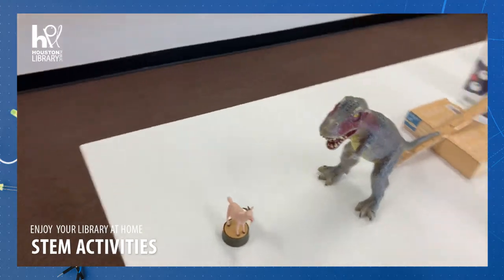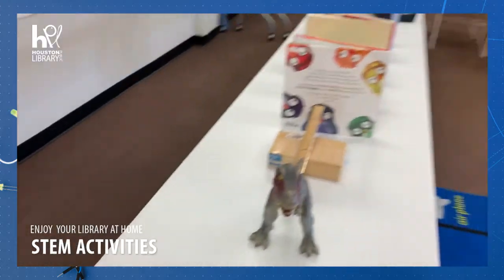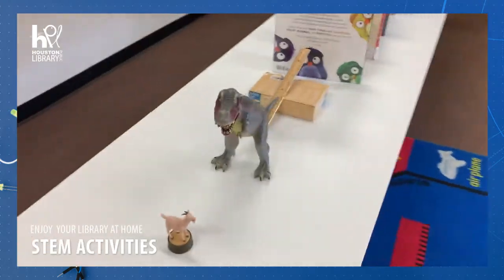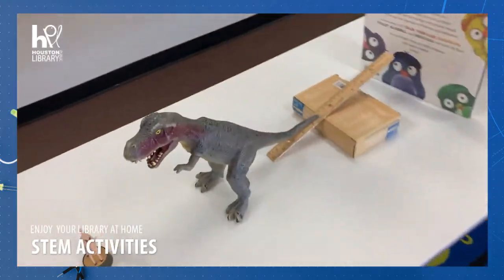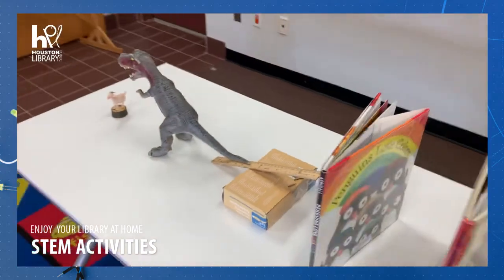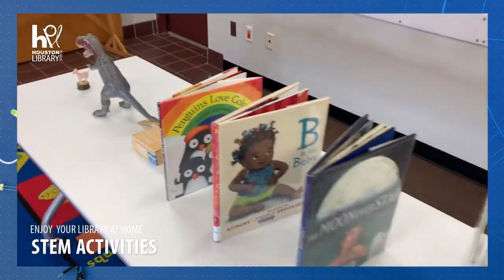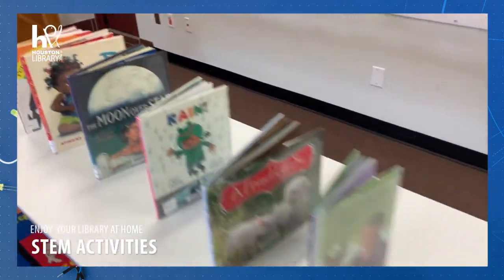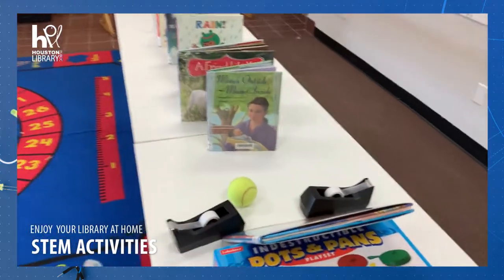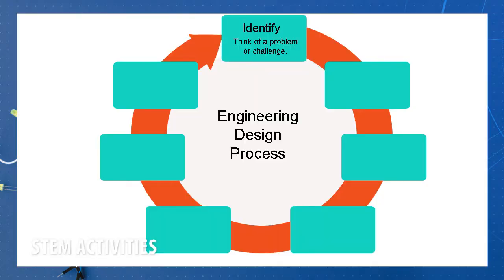So a Rube Goldberg machine is made up of a series of chain reactions, which allows energy to be transferred through the contraption and cause each reaction. Simple machines like an inclined plane and a lever can help you direct energy to cause the reactions.